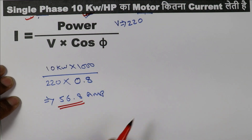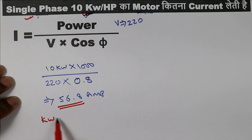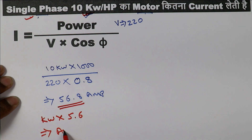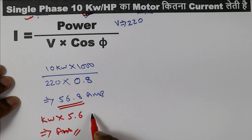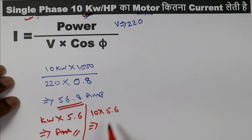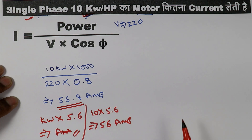For the short trick for a single-phase motor with kilowatt rating: simply multiply kilowatt by 5.6. For a 10 kilowatt motor, 10 multiplied by 5.6 gives 56 ampere. You can see the exact answer was 56.8 ampere and we got 56 — almost the same answer.